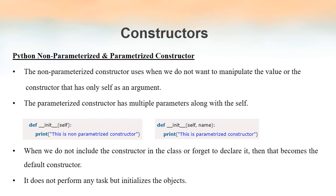If a programmer forgot to write a constructor or has not included any constructor in the class, then the class will use the Python-provided default constructor. Even if the programmer has not written a constructor, every class will have a default constructor. If the programmer has written a constructor, that one gets executed when an object is created. The default constructor will not do anything except initialize the object.